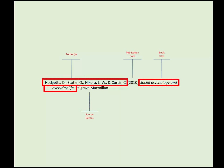This reference is for a book. The elements of a book reference are the authors, publication date, book title, and source details. To search for a book in library search, the title and or the author can be used.